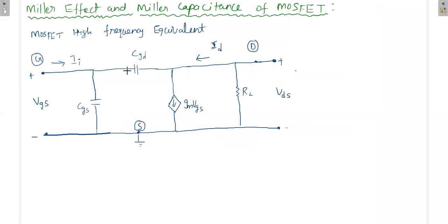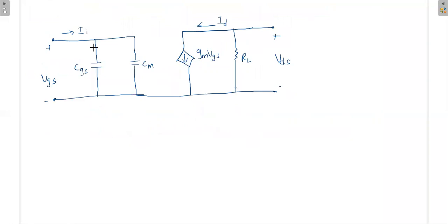This capacitance CGD will be mapped into the input as well as the output. Once we map this capacitance to the input side, that capacitance is written as Miller capacitance CM in parallel with CGS. So CGD will be mapped as CM at the input side.